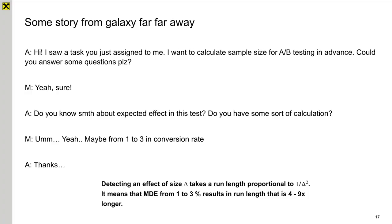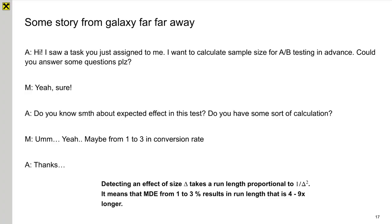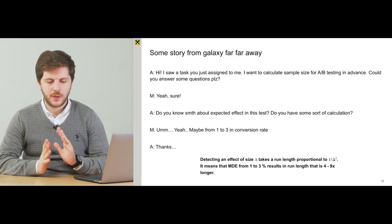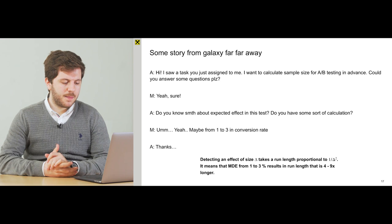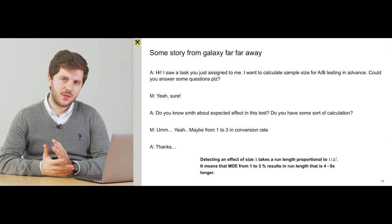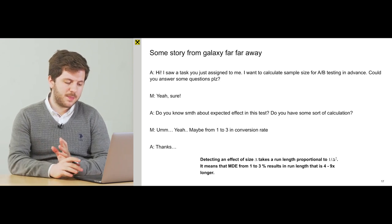Because to detect an effect of size delta takes a run length proportional to 1 divided by delta squared. It means that when we are talking about effect from 1 to 3 percent in conversion rate, the run length could result in from 4 to 9 times longer than it should be. When we discussed this fact, I propose you to move on and discuss the result of performance of MSPRT.